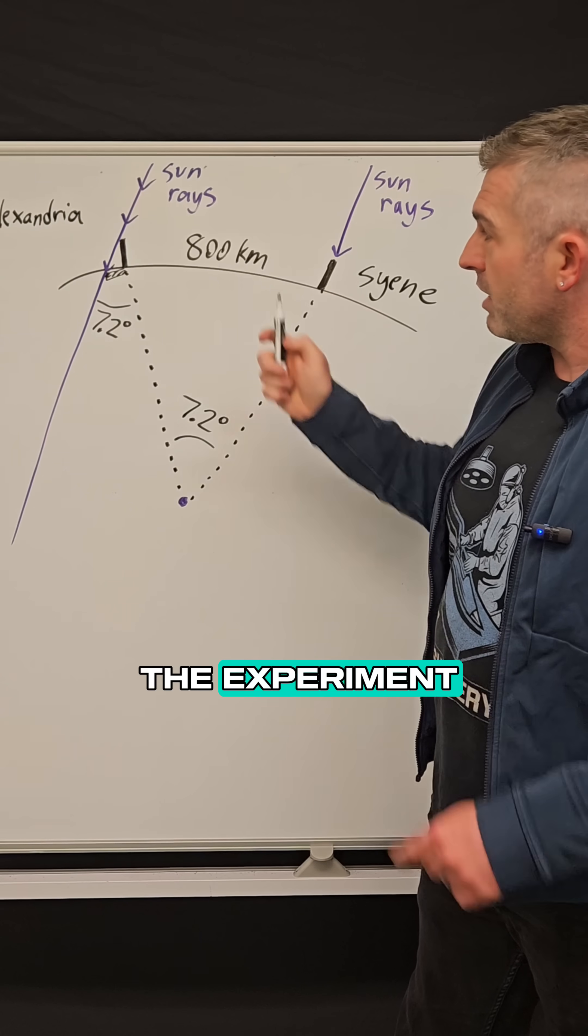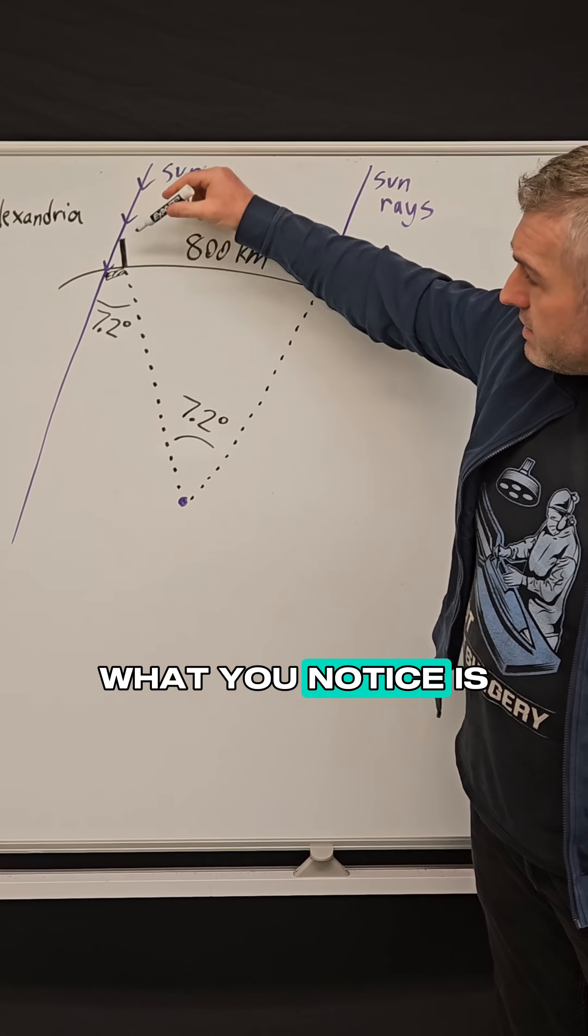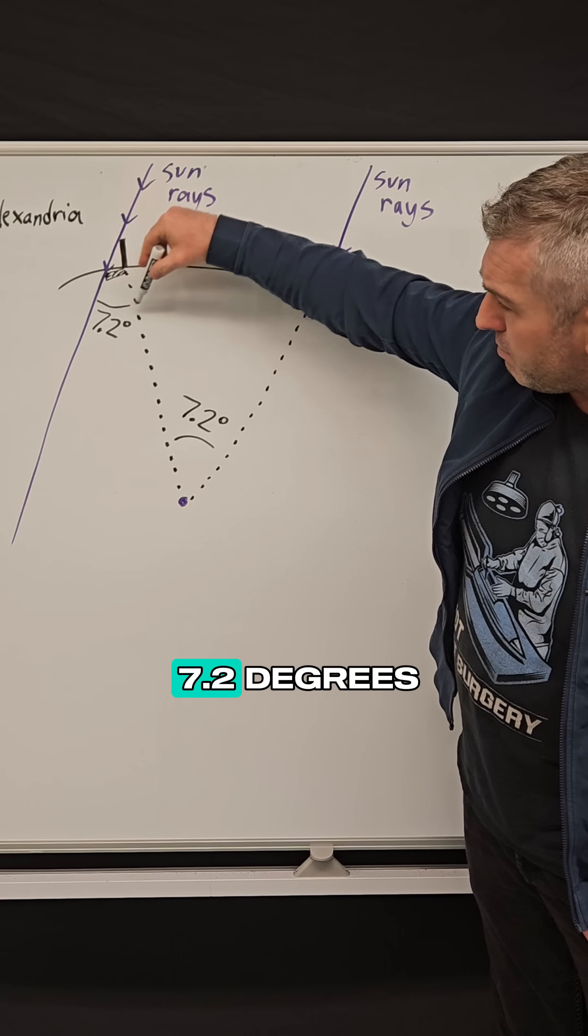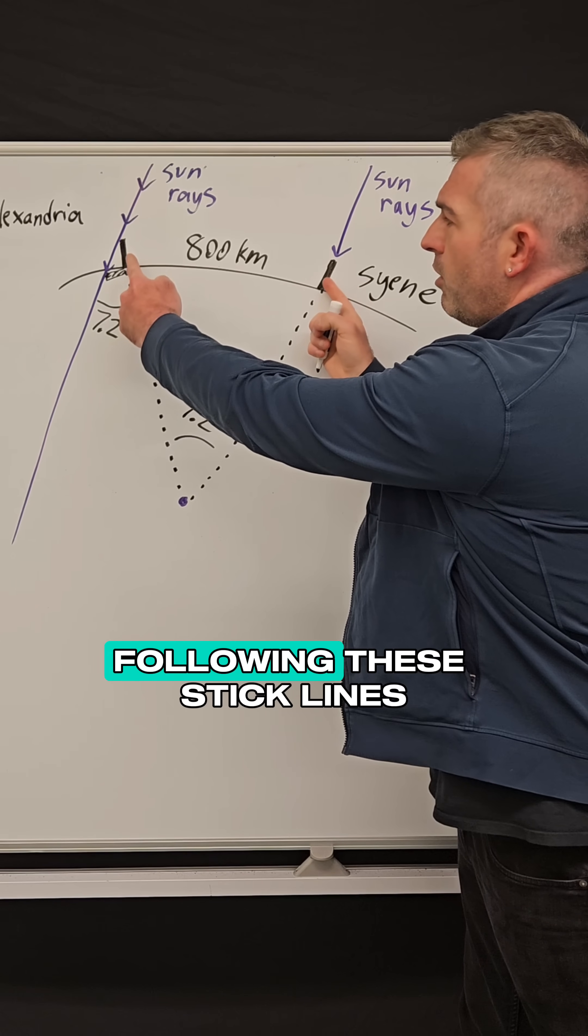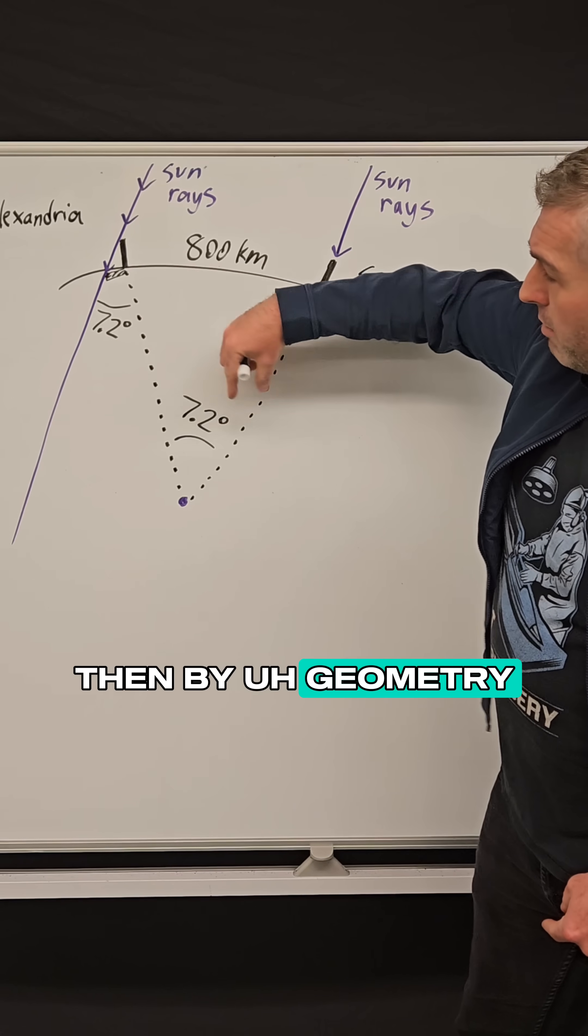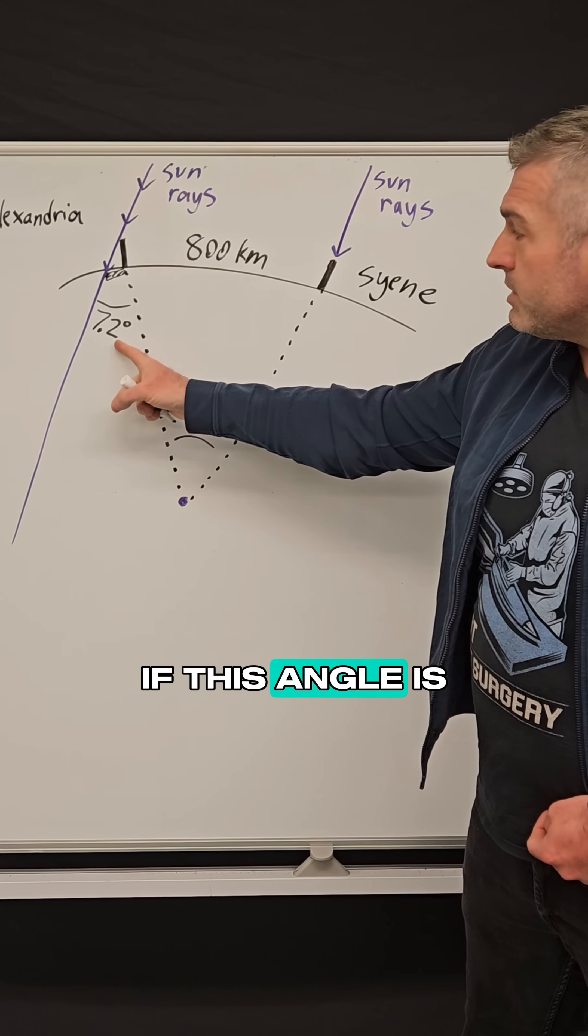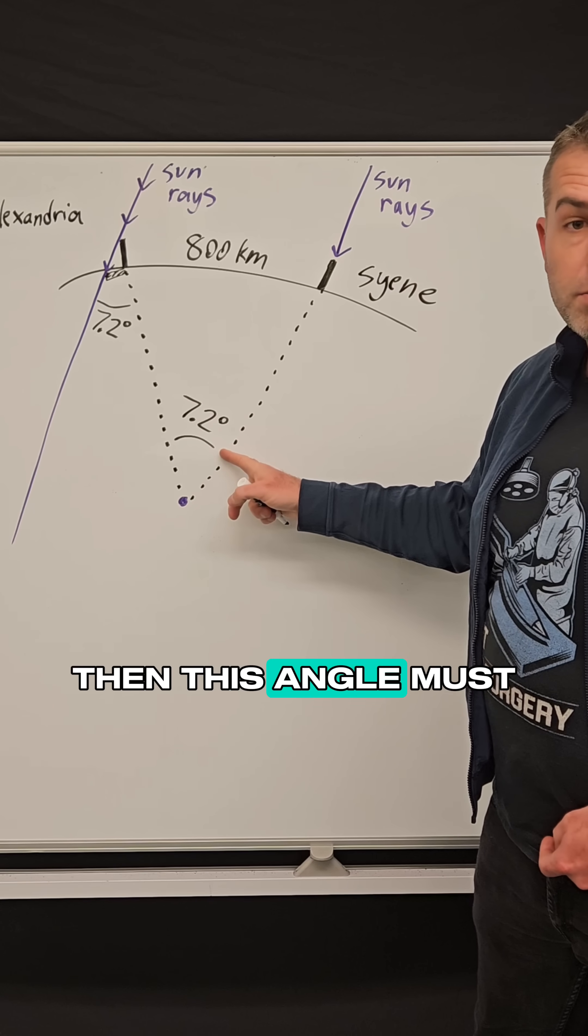Now going back to the experiment, if you were to trace these sun rays all the way through, what you notice is if this angle is 7.2 degrees and you imagine following these stick lines to the center of the earth, then by geometry, what we call alternate interior angles, if this angle is 7.2 degrees then this angle must also be 7.2 degrees.